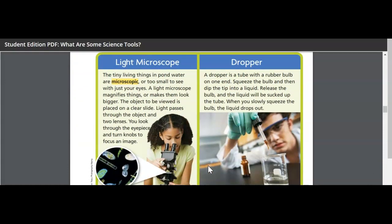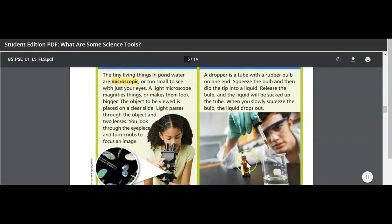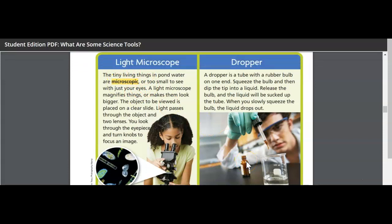Light microscope. The tiny living things in pond water are microscopic, that's a vocab word, or too small to see with just your eyes. A light microscope magnifies things or makes them look bigger. The object to be viewed is placed on a clear slide. Light passes through the object in two lenses. You look through the eyepiece and turn knobs to focus an image. So she's focusing here on something that's sitting on the slide.